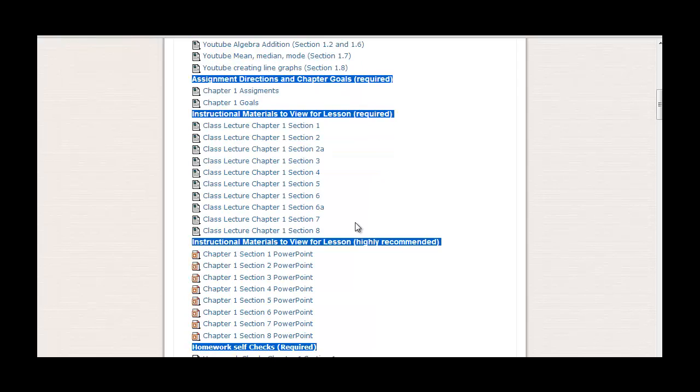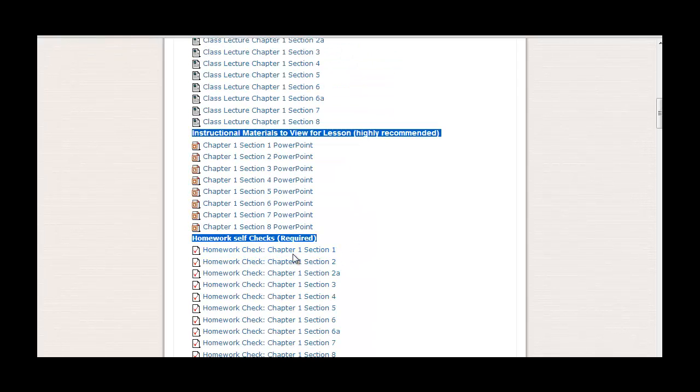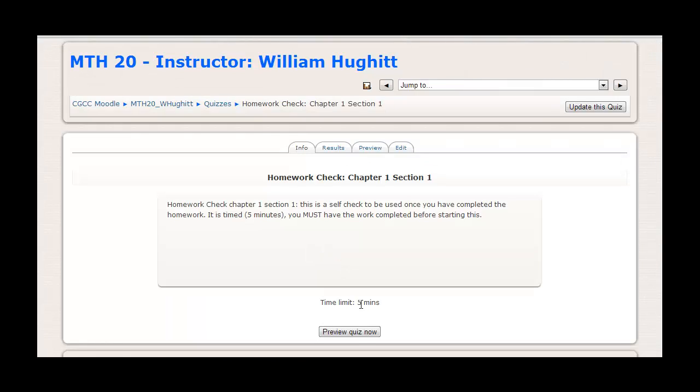So let's get out of here. Let's go back up to our main problem. At the end of each section, then you're going to have a homework check. So you hit this after you've done the homework and the assignment. So you should have your assignment already completed because you've already looked at the assignment and know that for section one you're doing fifths. So when you do this then, you're going to take your quiz. You're going to say homework section chapter one, section one. This is a self-check to be used once you've completed the homework.